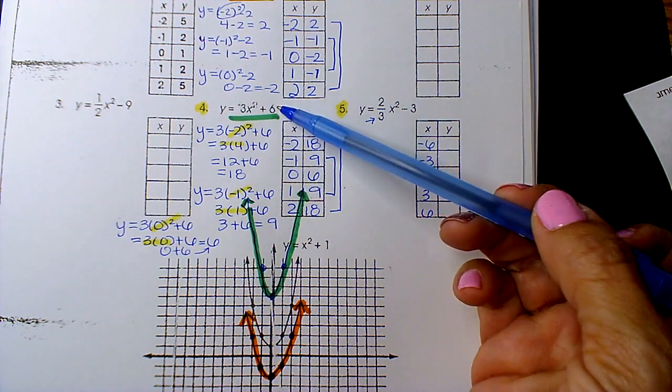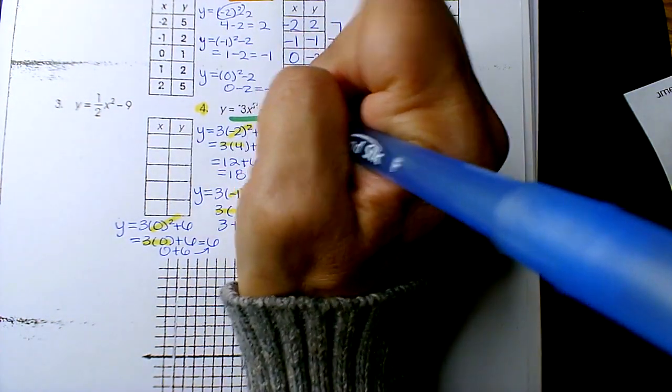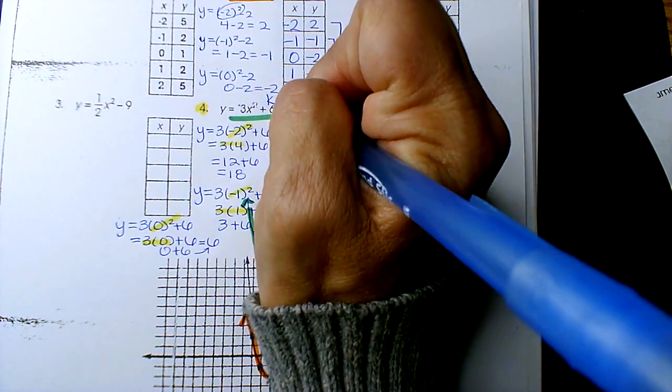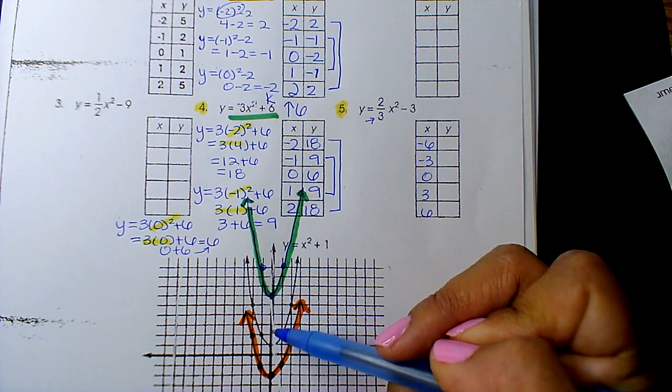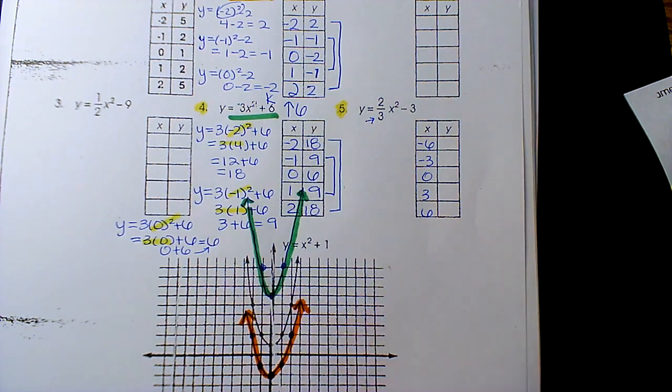So your K value is 6, and because 6 is positive, you're going to go up 6 units. So this is your origin: 1, 2, 3, 4, 5, 6. It's a vertical shift up.